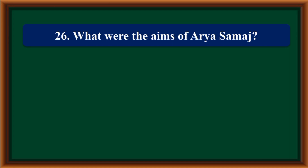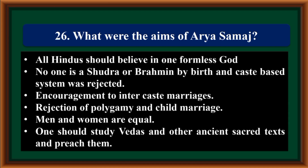What were the aims of the Arya Samaj march? All Hindus should believe in one formless God. No one is a Shudra or Brahmin by birth, and caste-based system was rejected. Encouragement to inter-caste marriages, rejection of polygamy and child marriage. Men and women are equal. One should study Vedas and other ancient sacred texts and preach them.